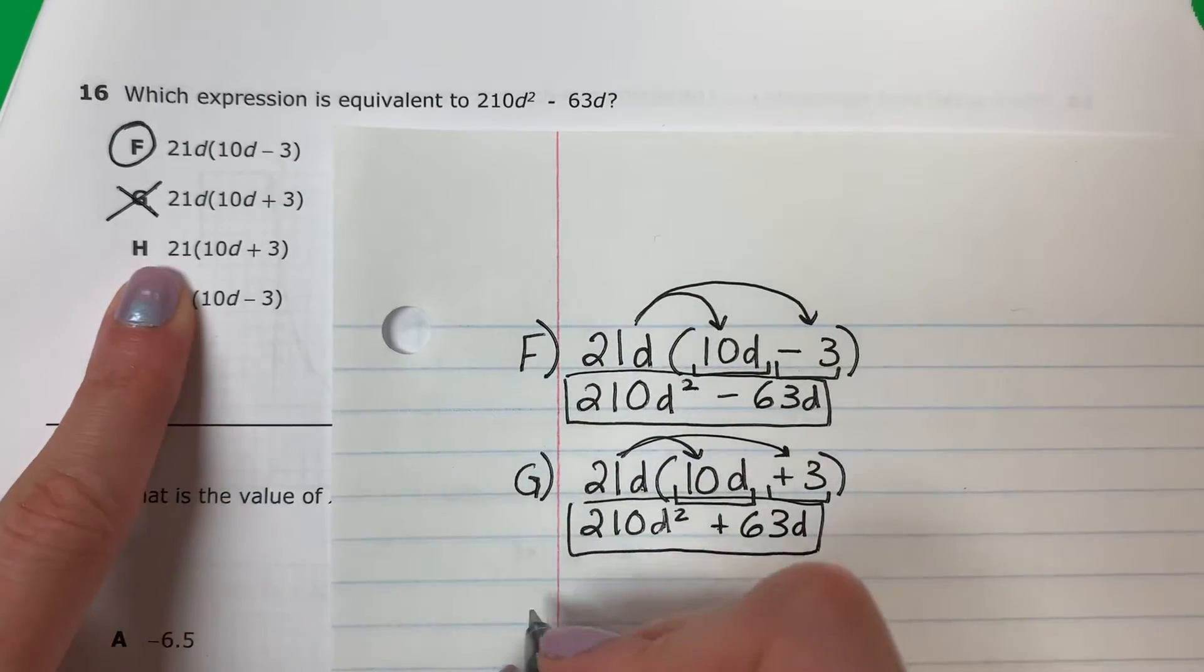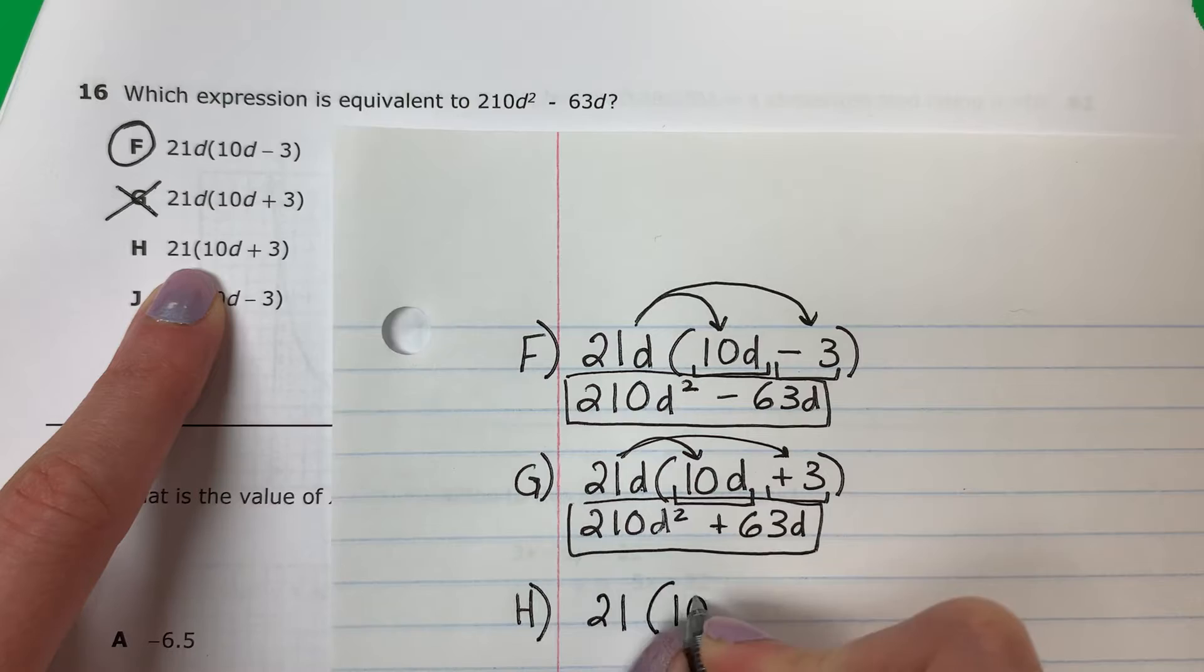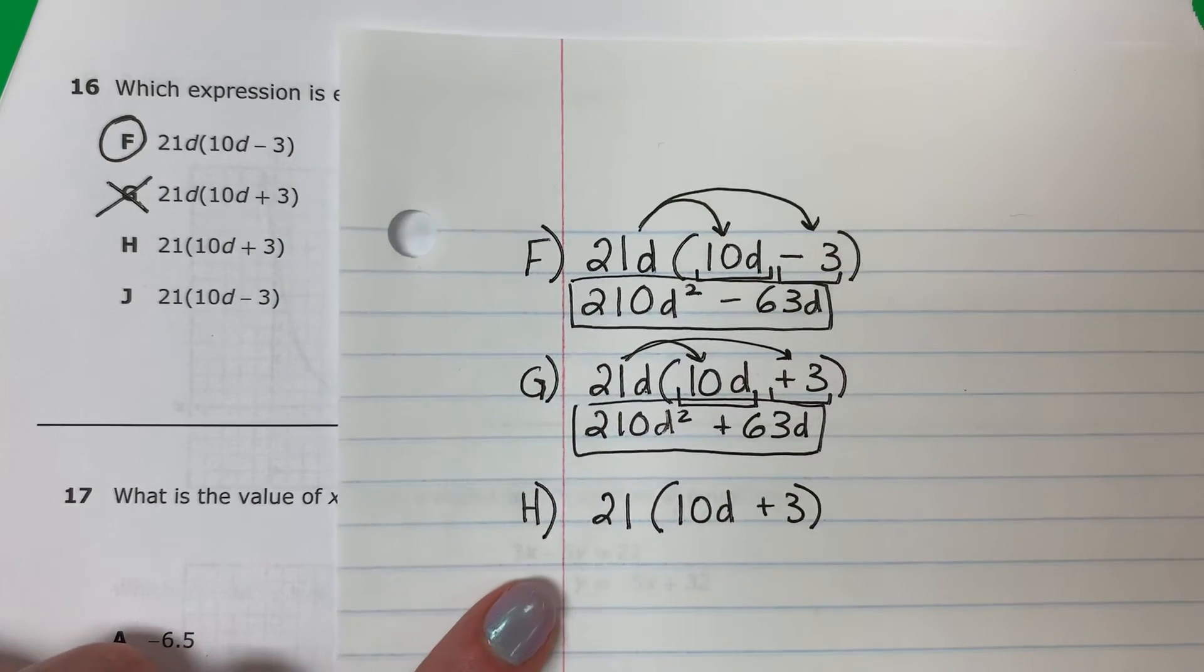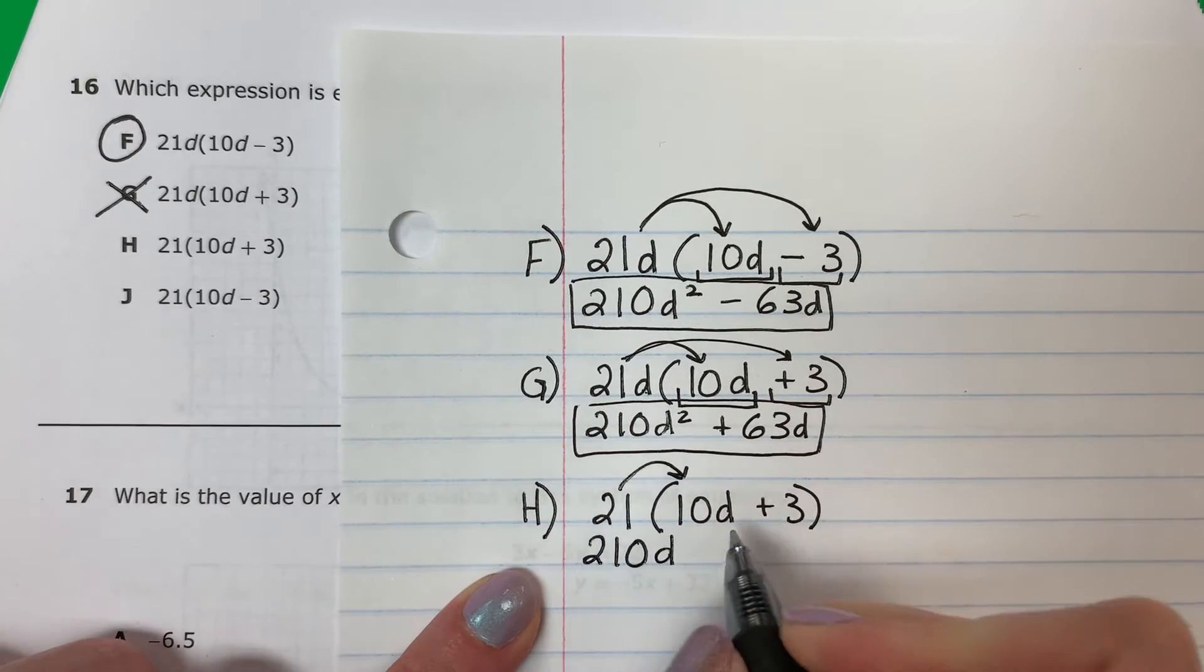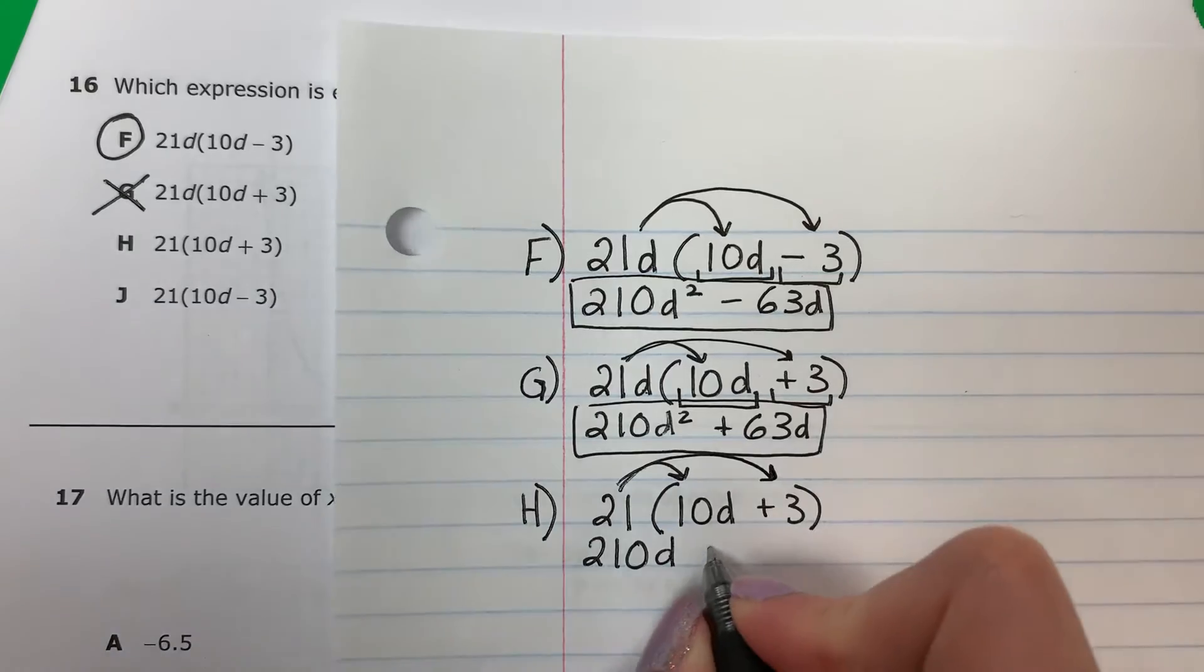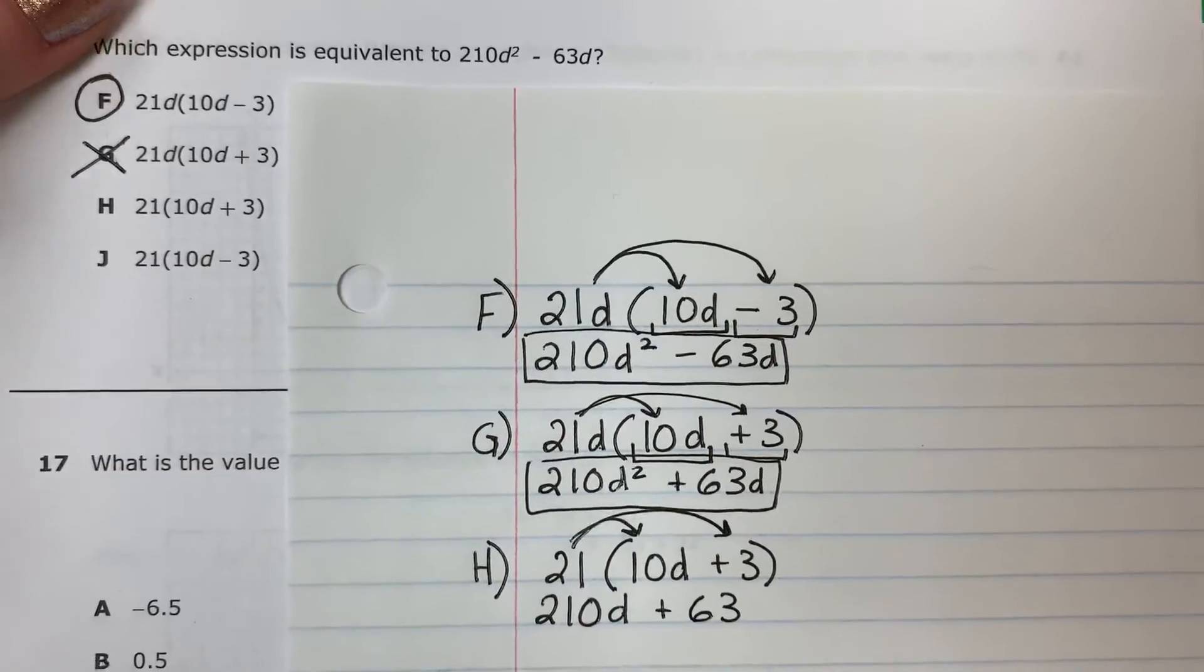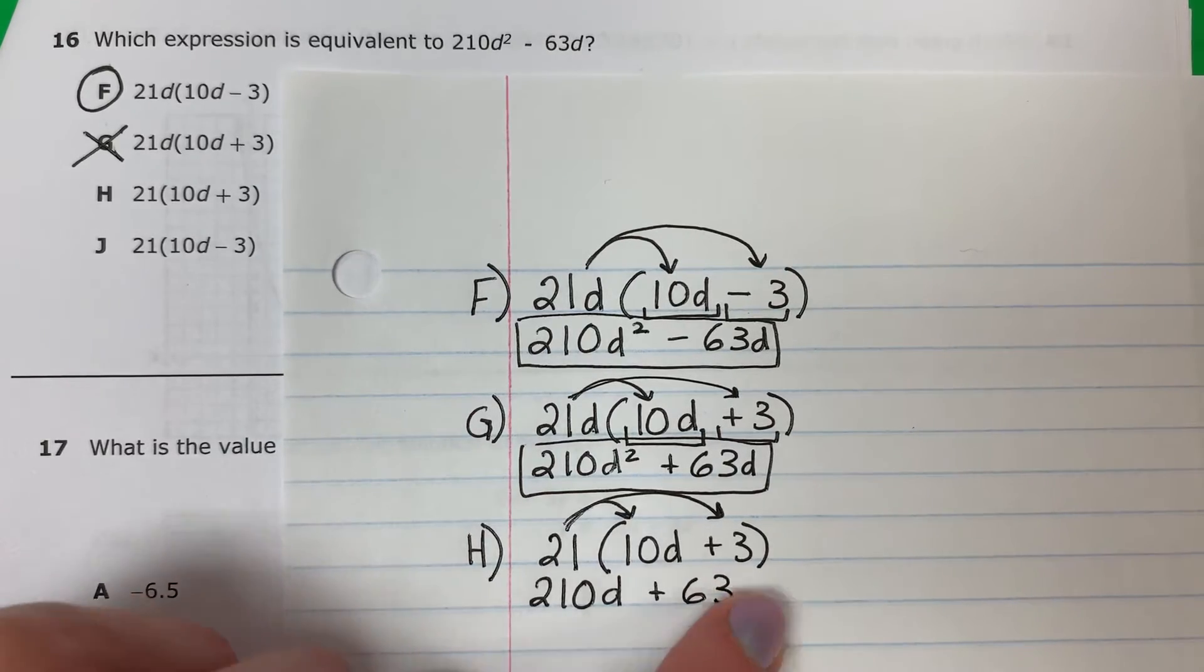Let's do another one. Let's do H. Vamos a hacer la H. So 21 times 10 D plus 3. Okay. This one's different because it doesn't have a D with the 21. Esta es diferente porque no hay D con el 21. So 21 times 10, veintiuno por 10, 210 D. Only one D. Solo hay un D. There's no D here. No hay D aquí. So there's no squared. No hay cuadrado. 21 times 3, veintiuno por 3, is positive 63. No D. Sin D. So what's different? Que es diferente. Here there's squared. Aquí hay cuadrado. Here no. Aquí no. And this one doesn't have a letter. Esta no tiene letra. Here there's a D.